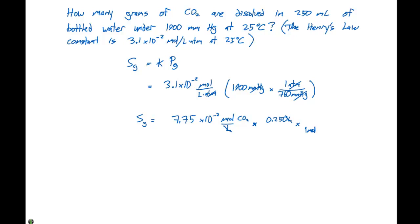We know that for every one mole of CO2, we have 44.0 grams of CO2. So now our moles of CO2 cancel. If we want to figure out how many grams, we take 7.75 times 44.01 times 0.250. And the grams of CO2 are 0.85 grams.